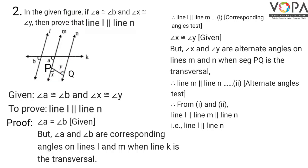From statements 1 and 2, we have l parallel to m and m parallel to n. That means all three lines are parallel: line l, line m, and line n. Therefore we can conclude that line l is parallel to line n.